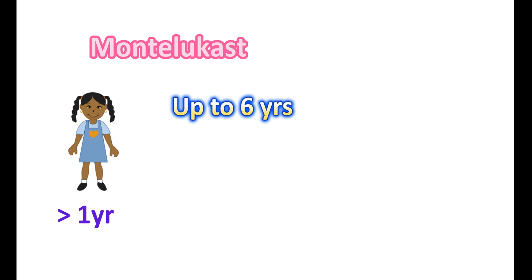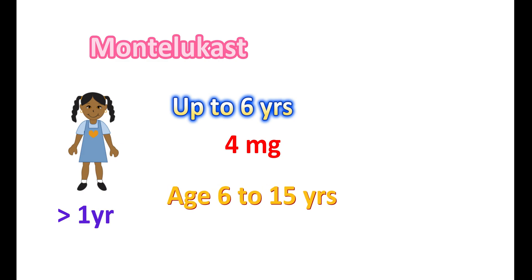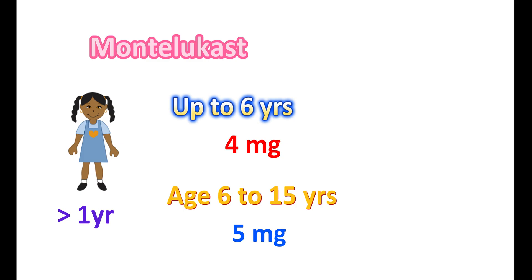Montelukast can be given to children aged above one year; however, the dose differs by age. In children up to 6 years, Montelukast can be given at a dose of 4 mg. In children aged 6 to 15 years, it is given at a dose of 5 mg. Never take higher doses, particularly in children, as it is not safe at overdose. Montelukast can be taken either with food or without food.